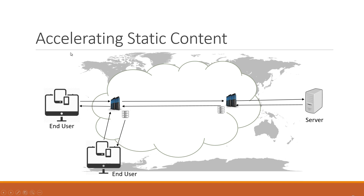Different end users from different locations may request the same object. Multiple tier-1 child servers are distributed across the globe, all connecting to the same set of parent servers, funneling requests toward the origin so that fewer persistent connections are created between the tier-2 parent servers and the origin. For static objects, you define the cacheability of the object — how long you want it cached at the CDN server. This is configurable using a Time to Live (TTL) value in seconds, minutes, hours, or days.